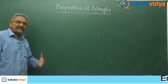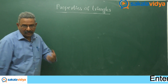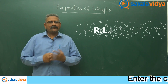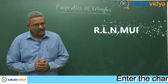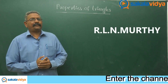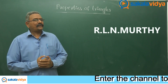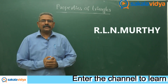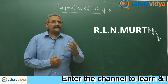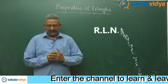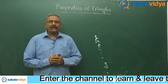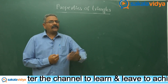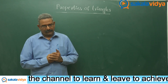Now, let us have a discussion on the different forms of inradius small r. In the previous episode we have proved r is equal to delta by s. Now let us prove other forms of the r value.